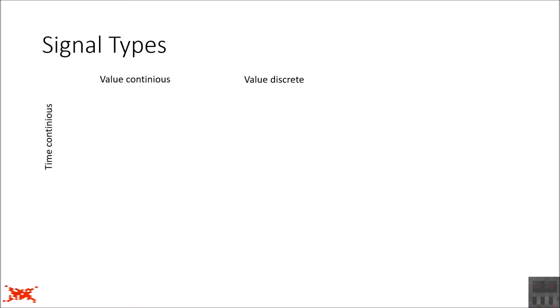Similarly, you can talk about time-continuous or time-discrete signals. A time-continuous signal can change its value at any given time. A time-discrete signal only changes at very specific points in time. Now let's start with one extreme: time-continuous and value-continuous, which is commonly referred to as an analog signal.